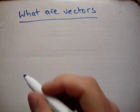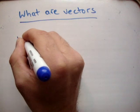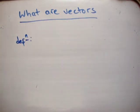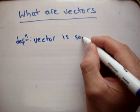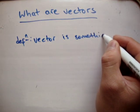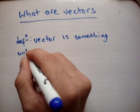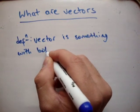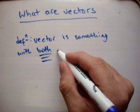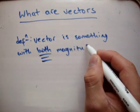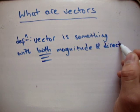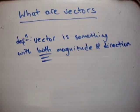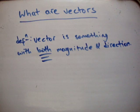So the definition of a vector: a vector is something with both magnitude and direction. That's a pretty simple definition. It's something with both magnitude and direction.